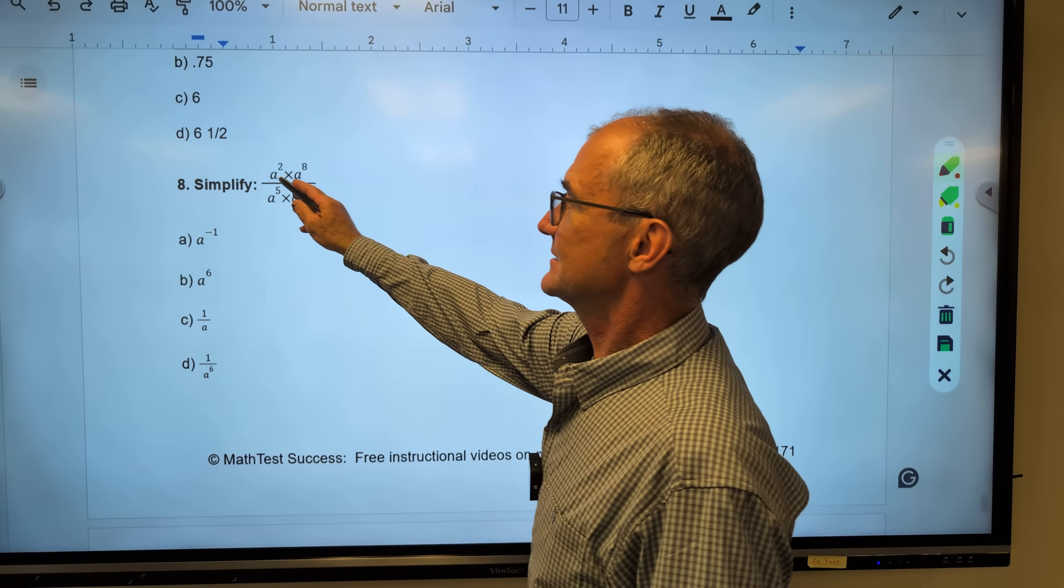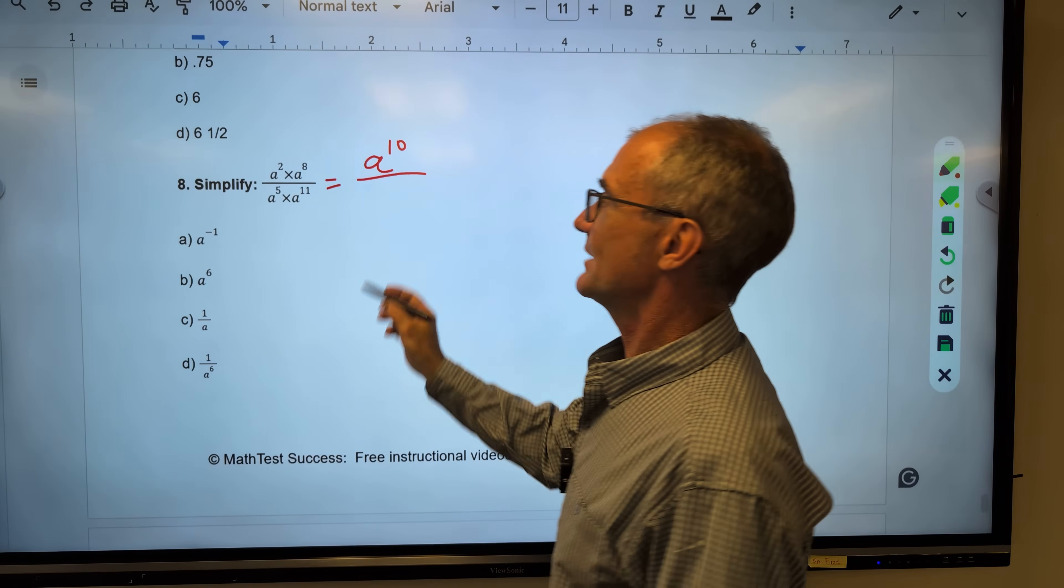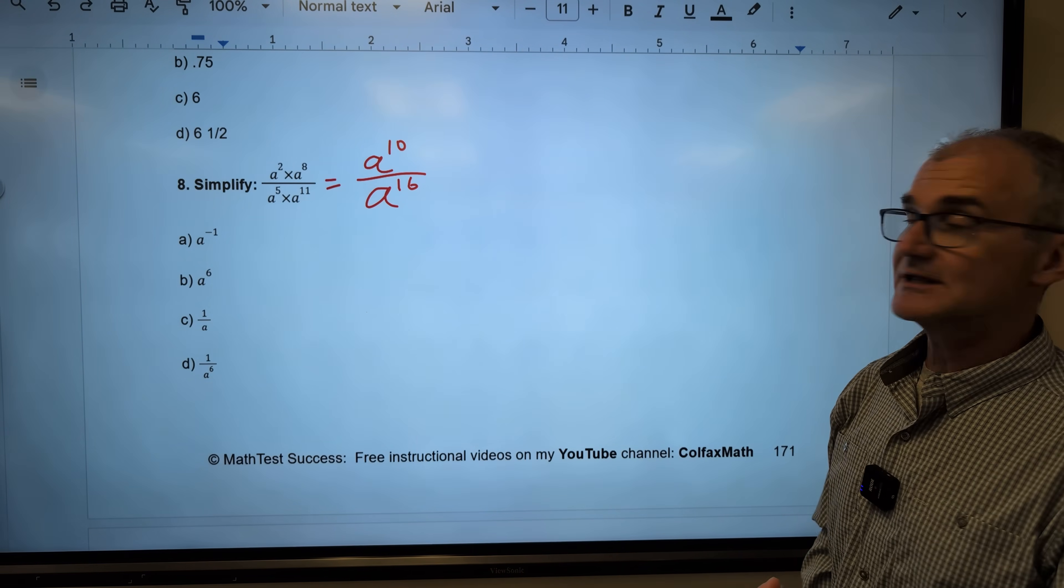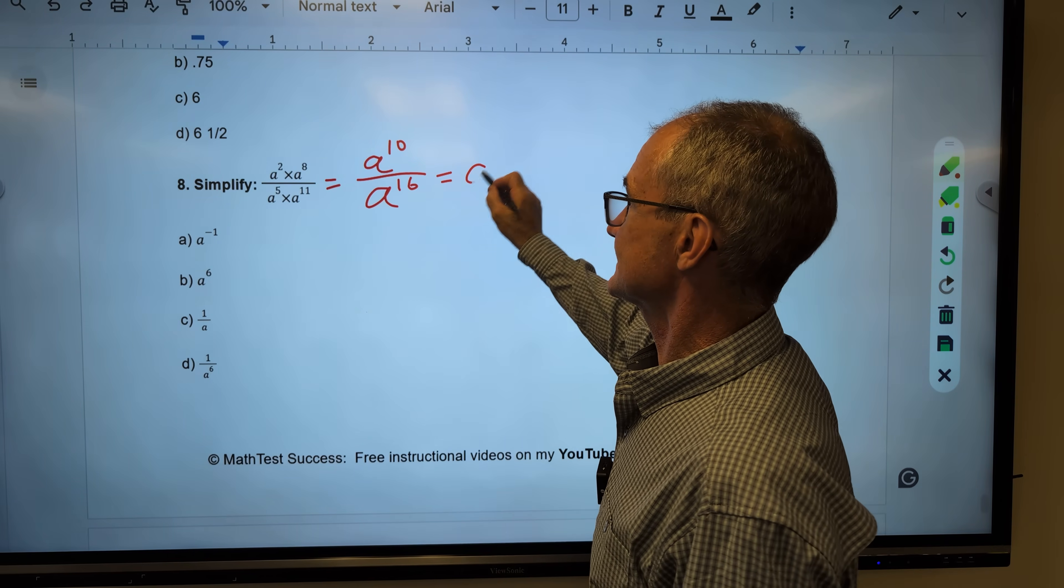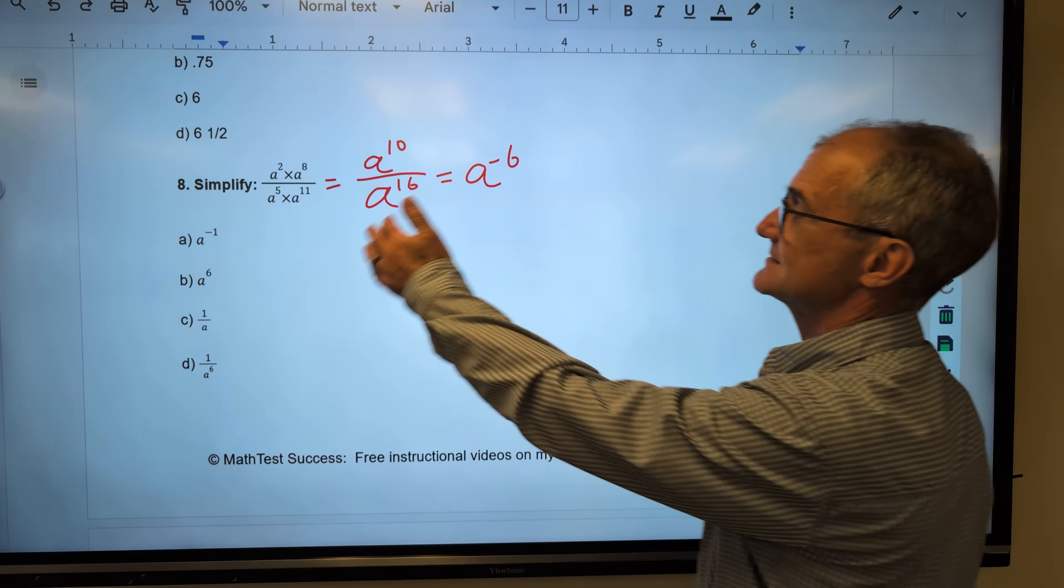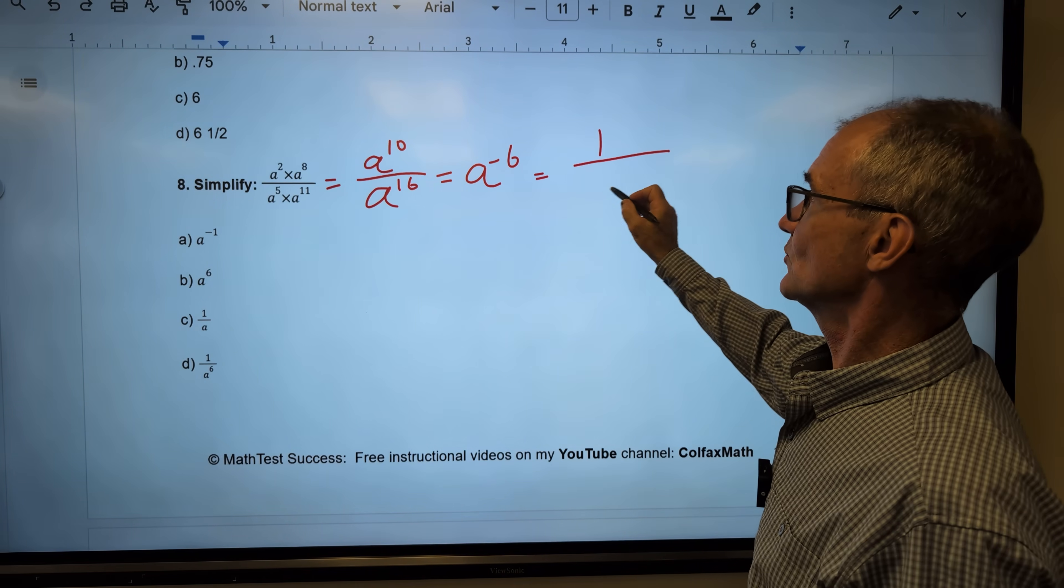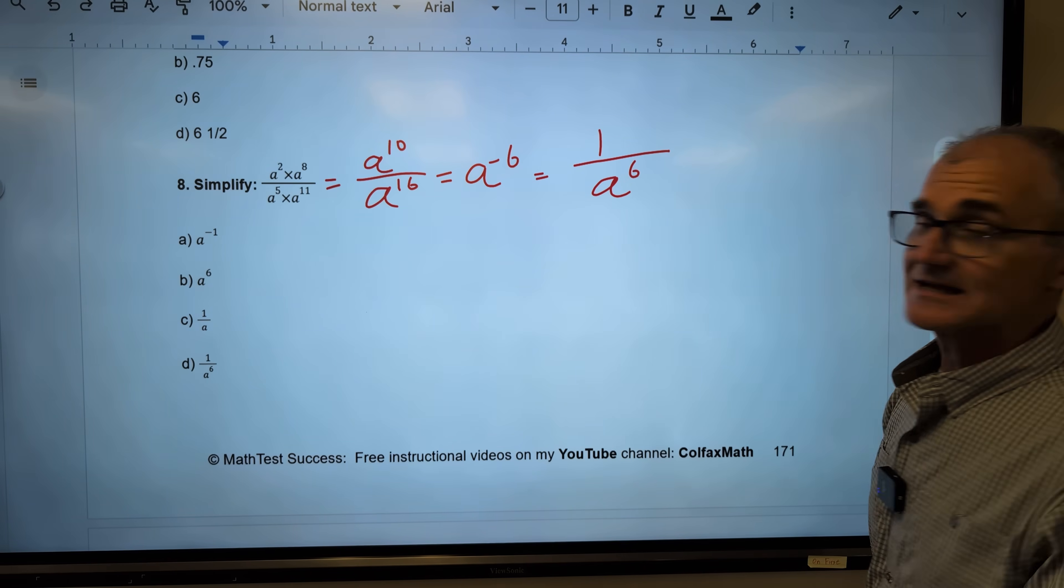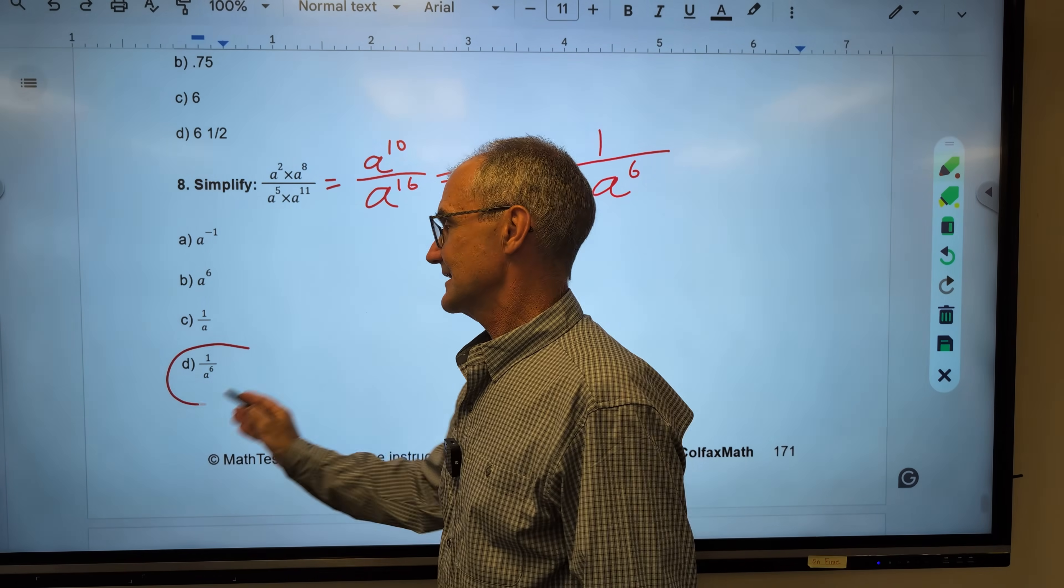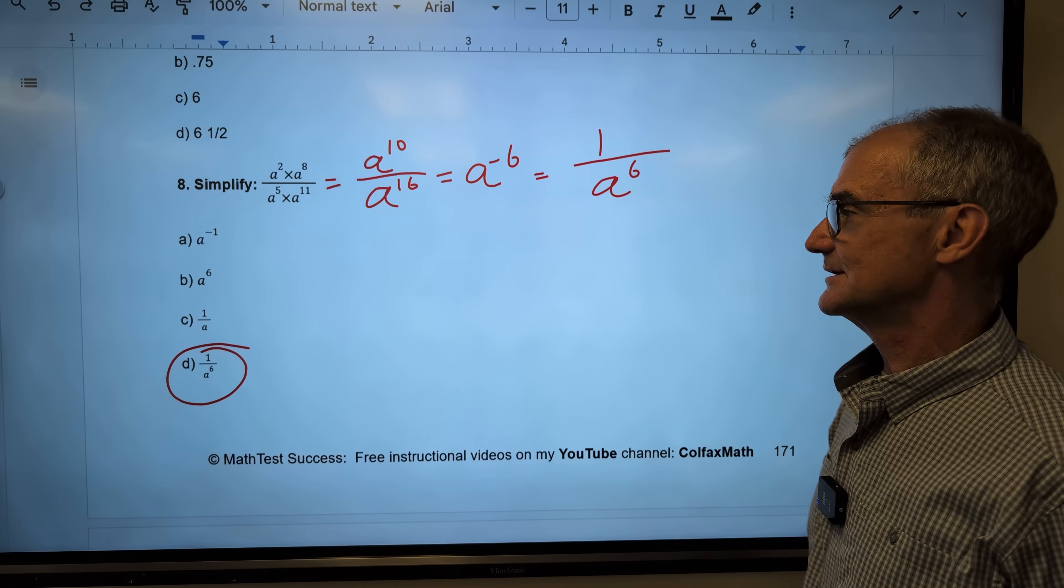A to the 1st times A to the 8th is A to the power of 8 plus 2, 10. On the bottom here, A to the 5th times A to the 11th is A to the 16. That's my first rule of exponents. Next rule of exponents is I have to subtract. That's going to give me A to the 10 minus 16, A to the negative 6. That answer is not there. The way I can make this positive is I can reciprocate it. So I make it 1 over A to the 6th, and that's the third rule of exponents. So you can make it negative by putting it in the denominator like that. That correct answer, answer D right there. Again, if you don't really remember all this and you need more practice, go back to the chapter on exponents.